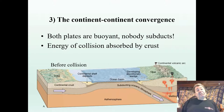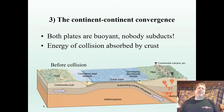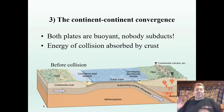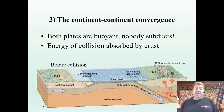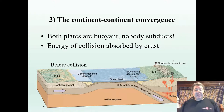Let's look at continent-continent convergence mountain building. In this case both continental plates are buoyant, so neither gets to subduct. Instead of collision energy going down the trench with subducting lithosphere, it gets absorbed by the crust — it's like two cars playing chicken and nobody backs off. Our prime example of this is the Himalayan mountains. About 40 million years ago, the subcontinent of India smashed into Asia and started to develop the Himalayan mountains.